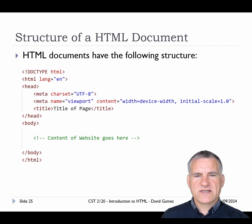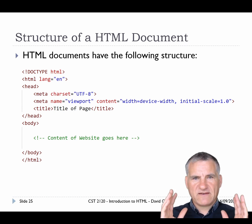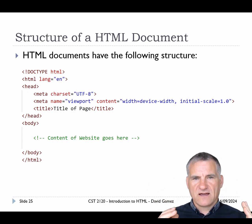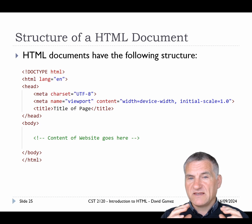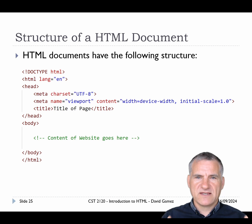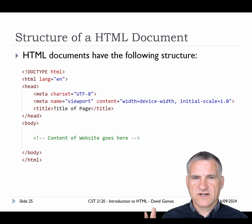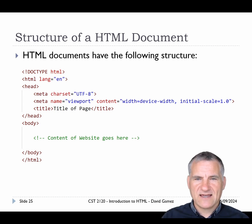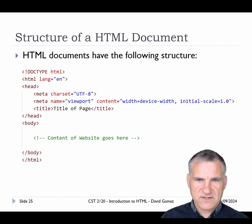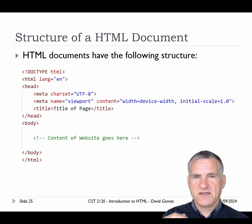HTML documents have a tightly defined structure. The good news is you never need to remember this boilerplate — it's a set of HTML that's in every single document. If you're using a modern IDE like VS Code, you can generate this structure immediately without having to remember all the details like the lang attribute. You need to understand it and make sure your documents conform to the template, but VS Code can generate it for you.